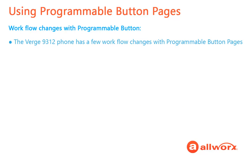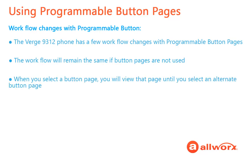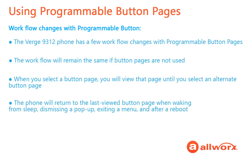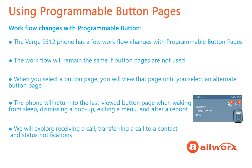When using programmable button pages, some workflows will be different with the Verge 9312. If you decide not to configure any of the programmable button pages, your workflow will remain the same. When you select a particular programmable button page, you will view that page until you select a different one. The phone will return to the last viewed page when waking from sleep, dismissing a pop-up, exiting a menu, and after a reboot. Remember to look at the programmable button page icon to know what page you are on. We will explore the workflow for receiving a call, transferring a call to a contact, and status notifications.